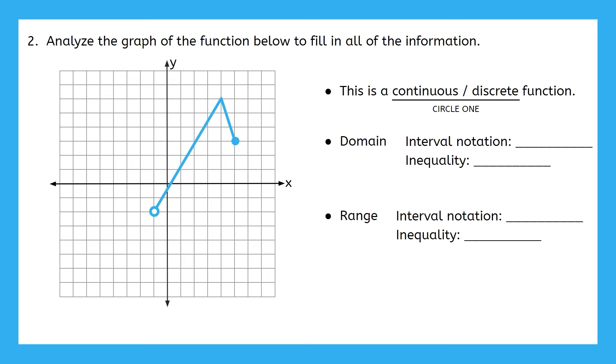The second example problem again asks you to analyze the function to determine the indicated attributes below. But before you start, let's have a closer look at this function. Notice that this function does not have arrows on either end. Instead, we have endpoints. One open circle endpoint and one closed circle endpoint. What did this mean in regards to our solutions? Which one includes the value at that point into our solution and which one does not?